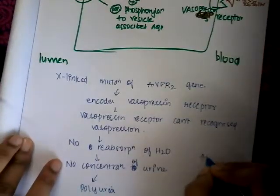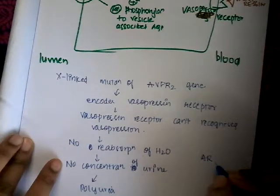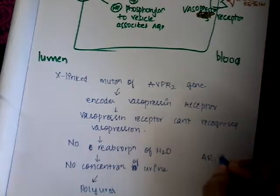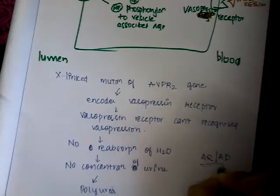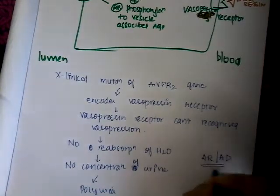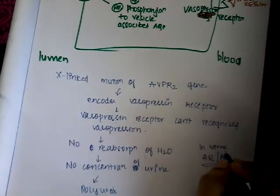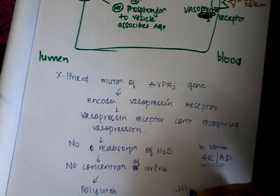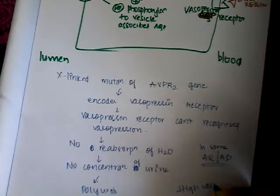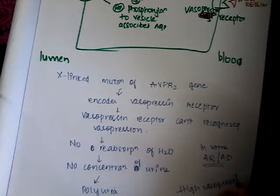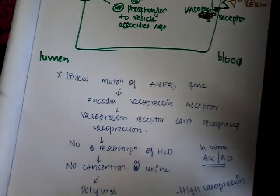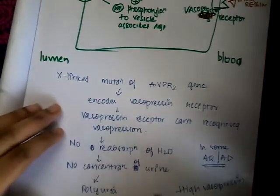In some cases it is autosomal recessive or autosomal dominant mutations; in some it is X-linked mutations. Here there is high vasopressin or ADH. Though there is high vasopressin, the ADH present is not recognized by the receptor because there is a problem in the receptor.